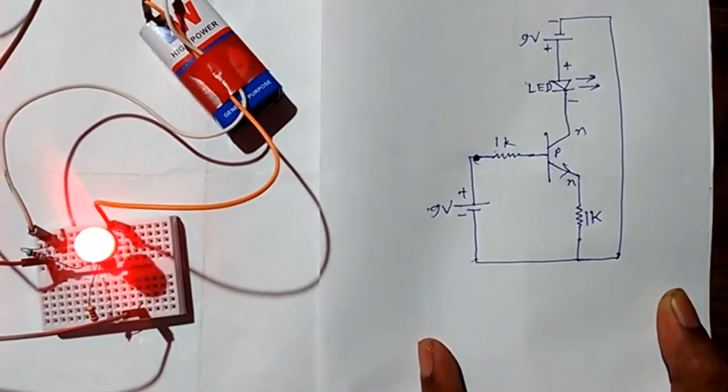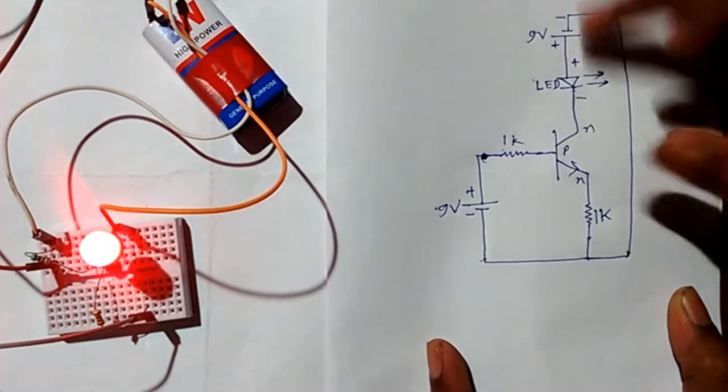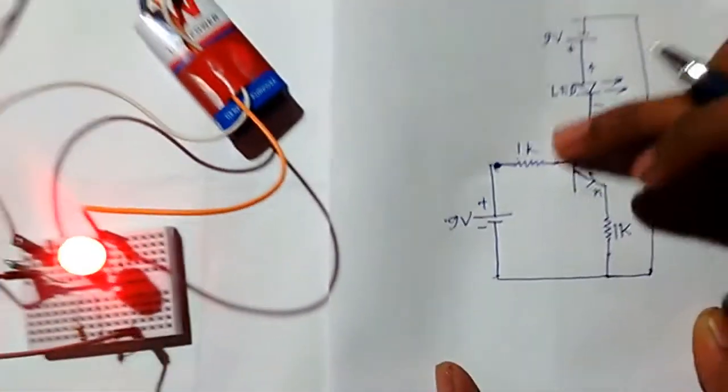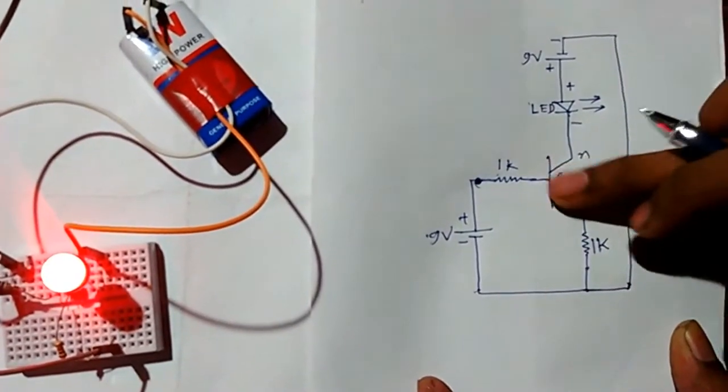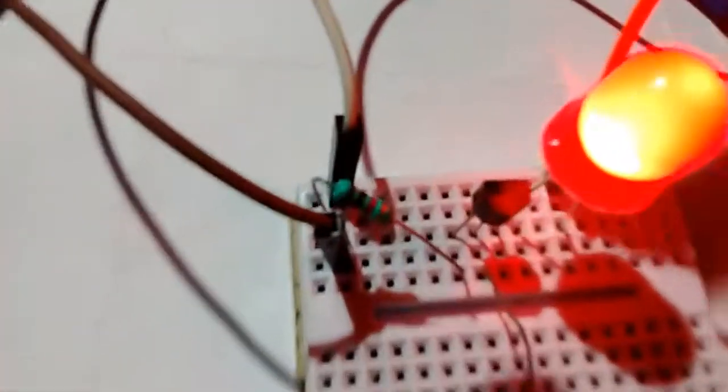Welcome to DPB Technology. Today we will see how a transistor acts as a switch. First of all, we will see the connection diagram. This is an NPN transistor I am using here, BC 547.